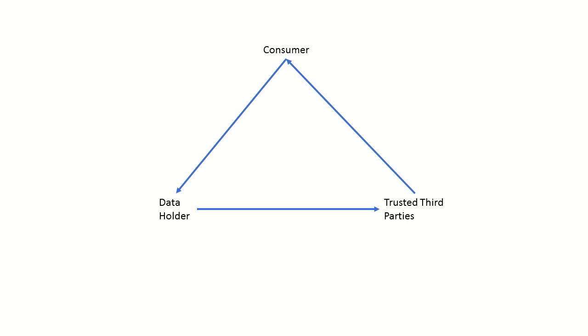This creates a need to address the absence of government and provide facilitation between these three parties. We are here to propose a new way of looking at the current open banking structure. We believe that the government should play a central role in the open banking process. As you can see in this figure, the government has been tasked to help facilitate the secure flow of information between the banking sector, registered third parties, and the consumer — to create a more direct line for consumers in terms of viewing and managing their data.